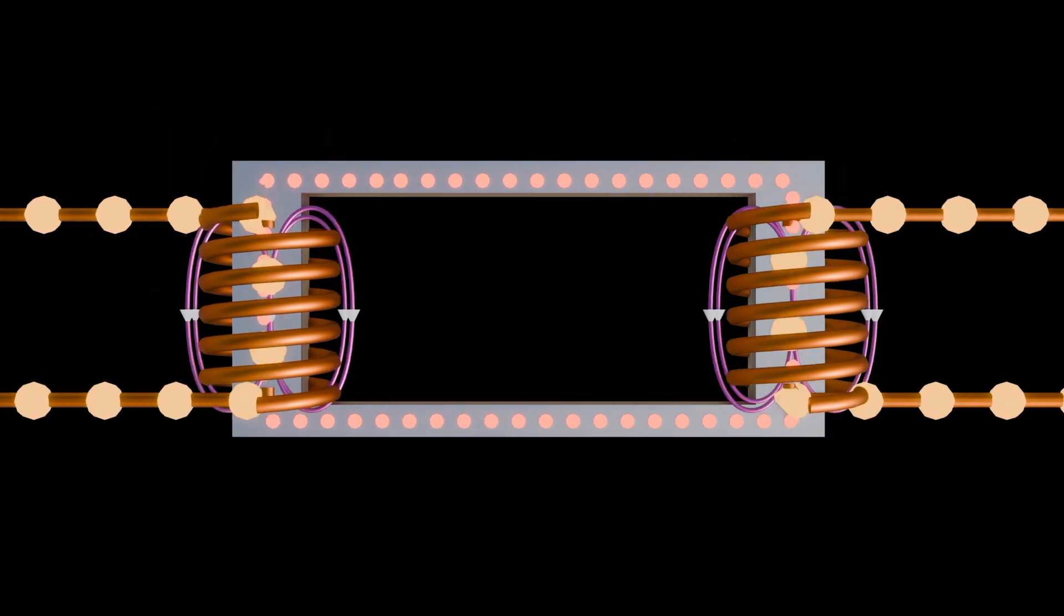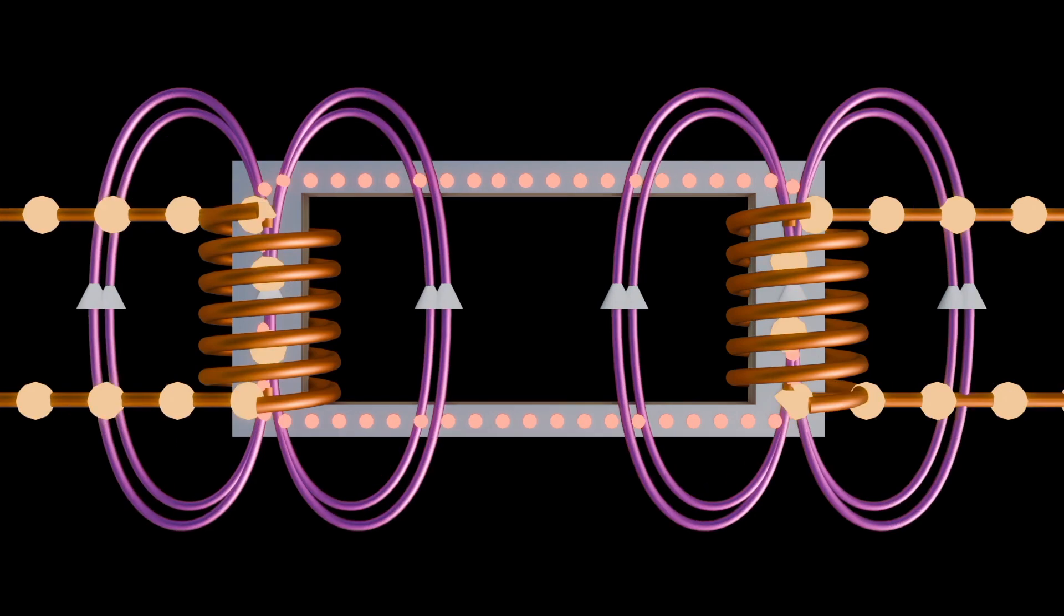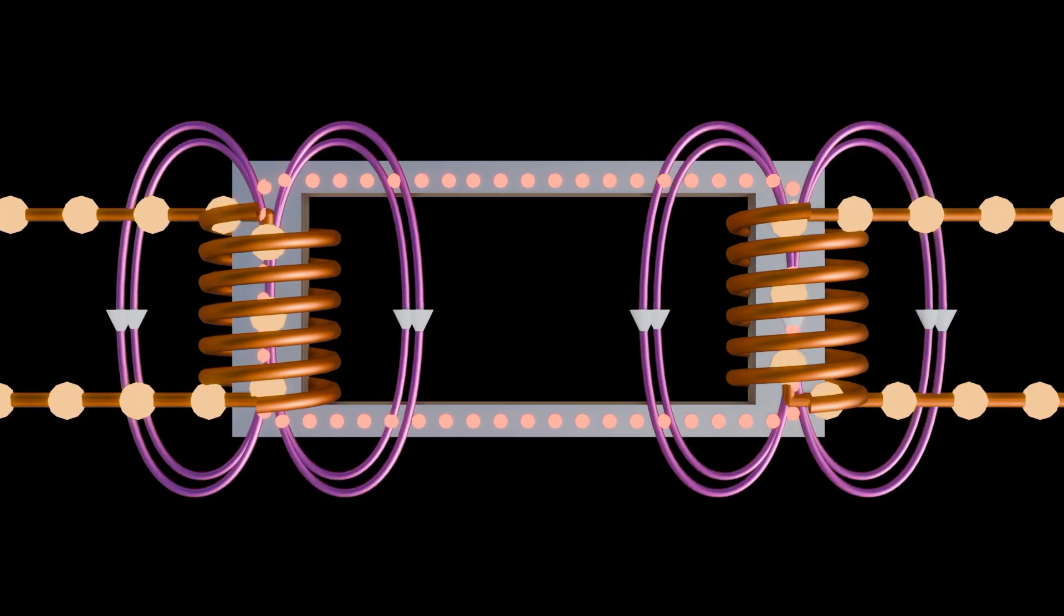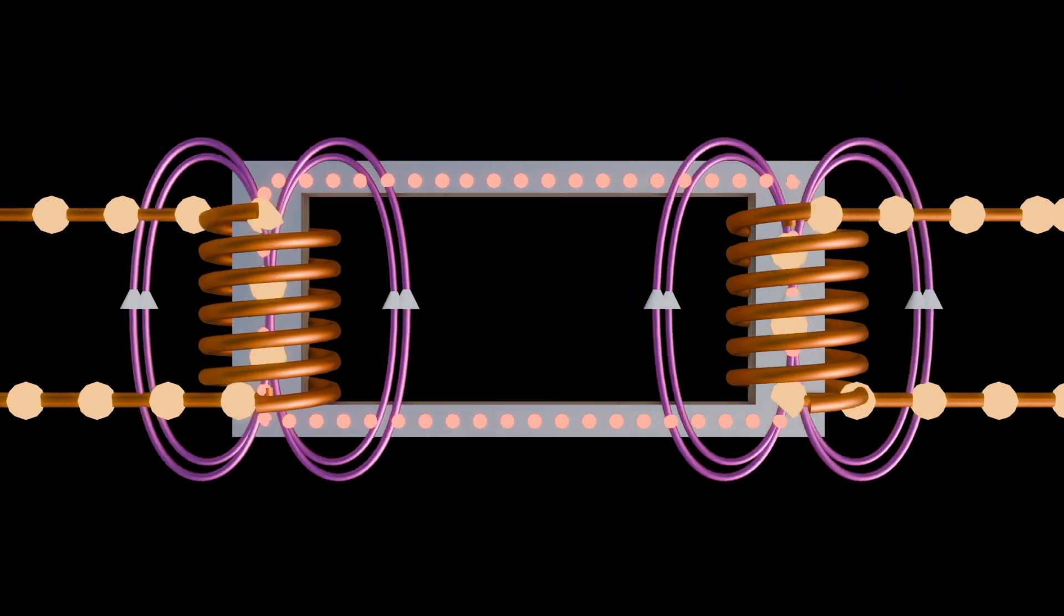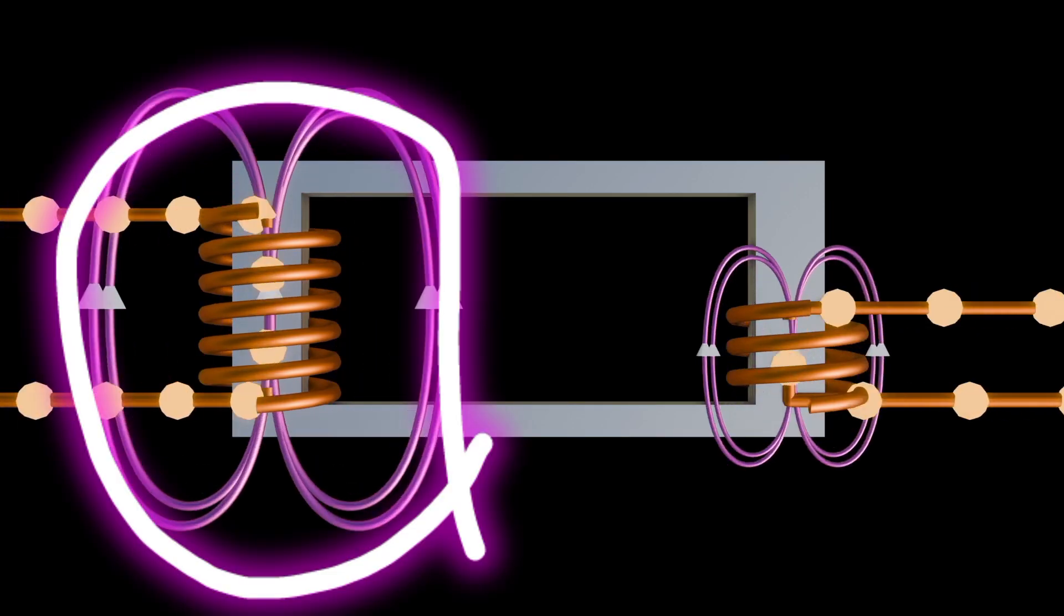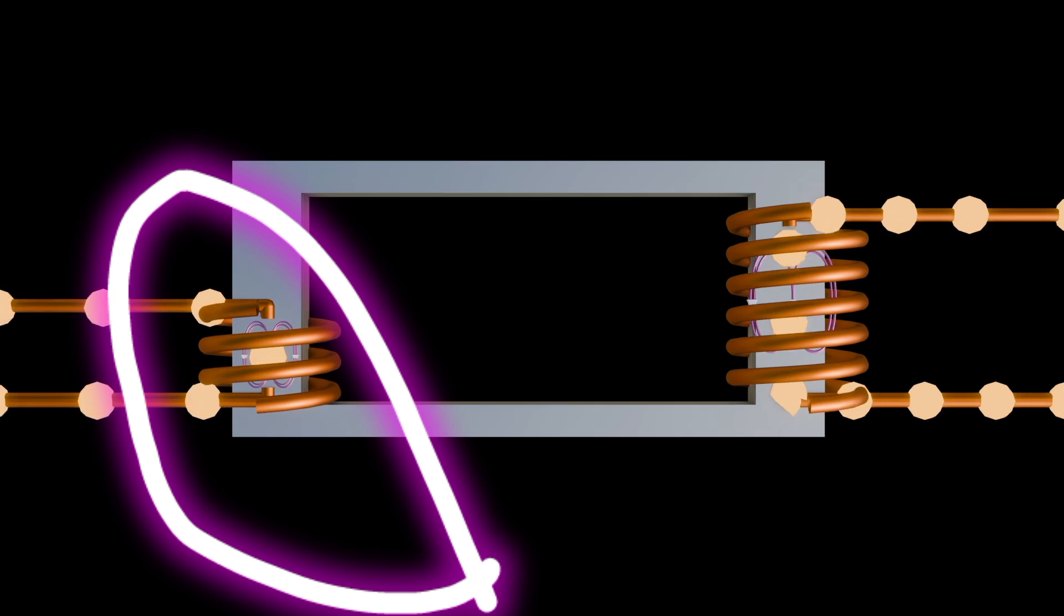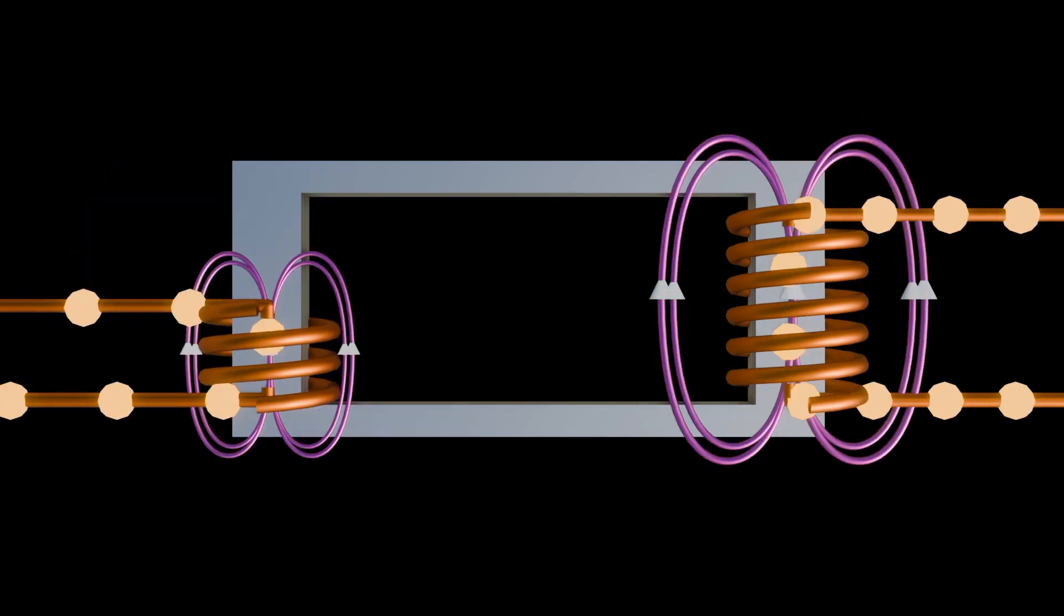Also the turns ratio between the primary and secondary coils determines whether the transformer steps up or steps down the input voltage. If the secondary coil has more turns than primary winding, then the transformer is a step-up transformer. Conversely, if the secondary coil has fewer turns than the primary coil, then the transformer is a step-down transformer.